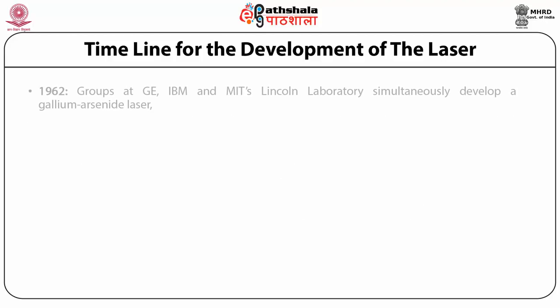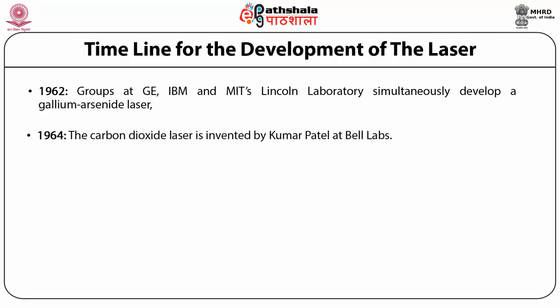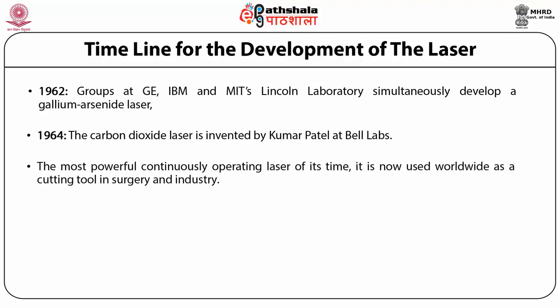In 1962, groups at GE, IBM, MIT, and Lincoln Laboratories simultaneously developed a gallium arsenide laser. In 1964, the carbon dioxide laser was invented by Kumar Patel at Bell Laboratories — the most powerful continuously operating laser of its time. As of 2019, it is now used worldwide as a cutting tool in surgery and industry.